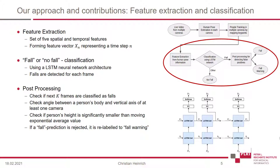It consists of three checks. First, check if the next K frames are classified as fall — K depends on the frame rate. Second, check the angle between a person's body and the vertical axis. Third, we compare a person's height as the distance from head to feet to the moving exponential average value. If a previously predicted fall event is rejected within this post-processing, it is relabeled as a fall warning.